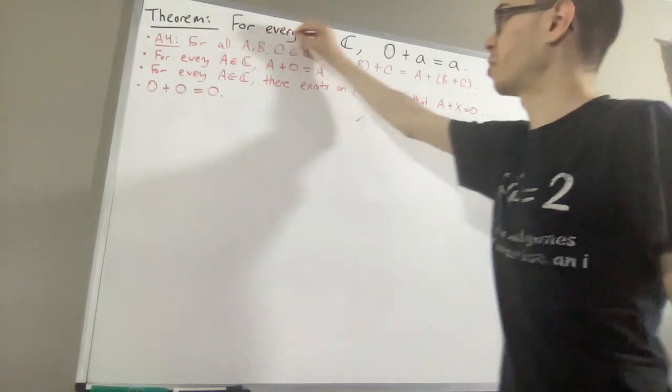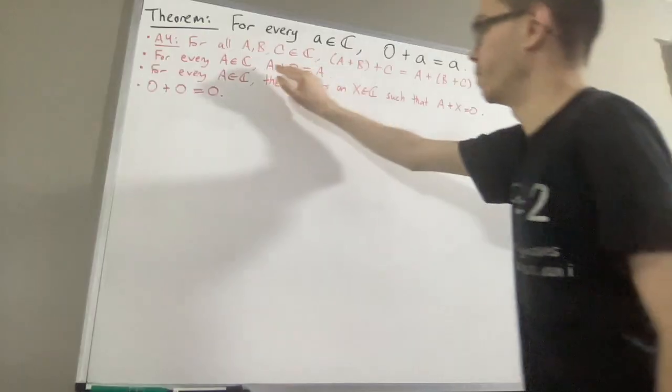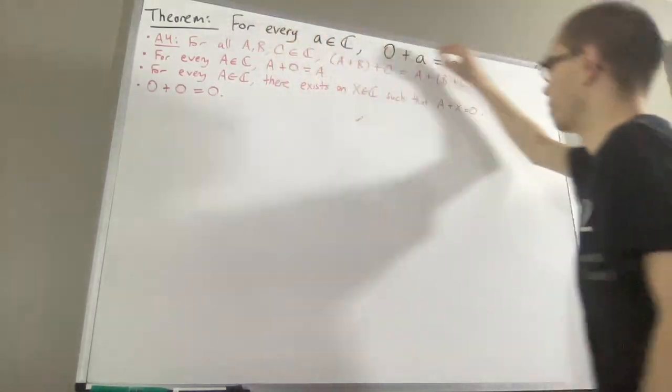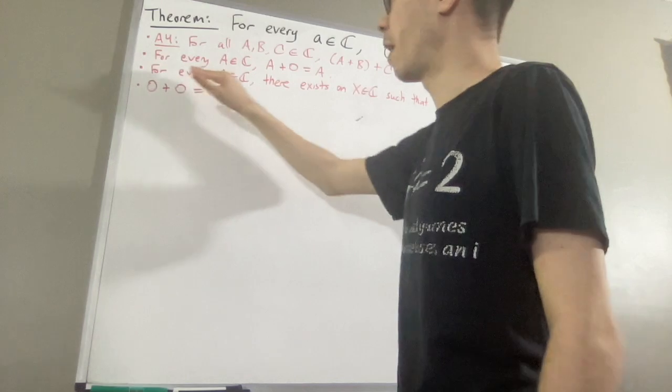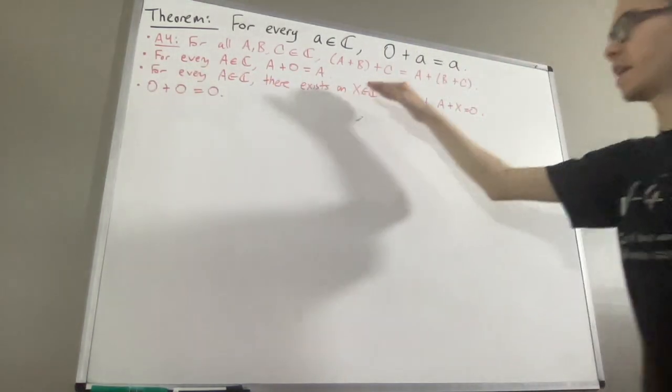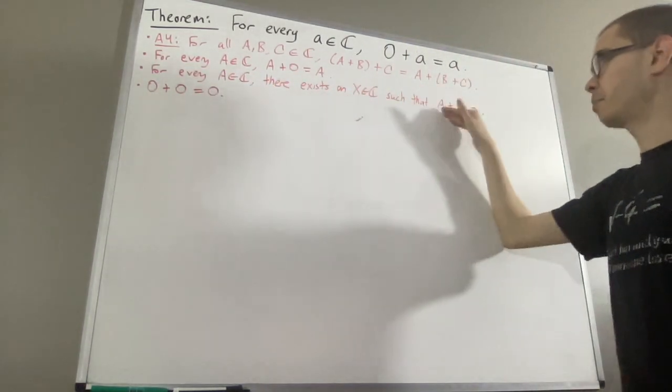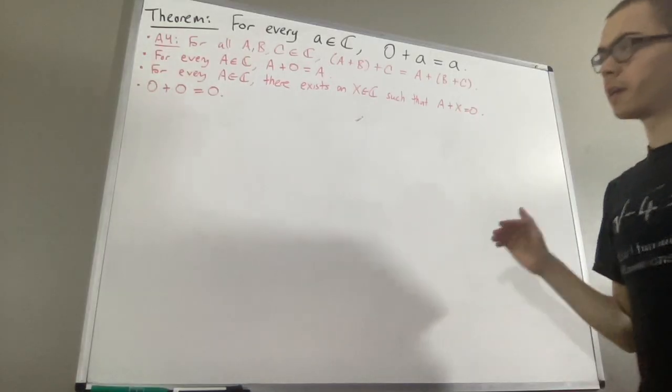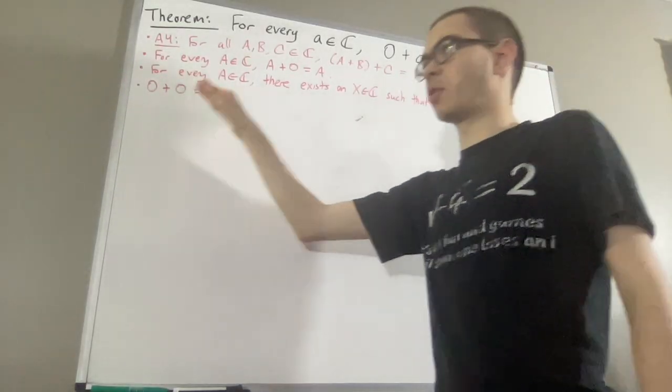So that looks really similar to the statement we're trying to prove. So we're going to be using this result to prove this result. We've also proven for every complex number a, there exists a complex number x, such that a plus x is equal to 0. We've also proven that 0 plus 0 is equal to 0.